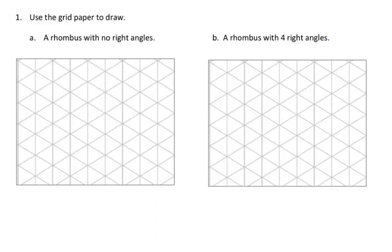We're going to look at homework problem number one. It says use the grid paper to draw. Part A is a rhombus with no right angles. Here it is. My lines indicate that each one of those sides are the same length, and you notice none of the angles are right angles.